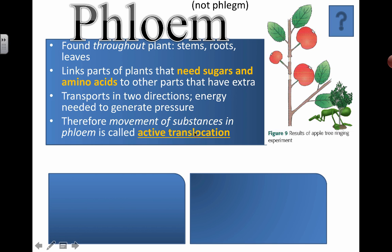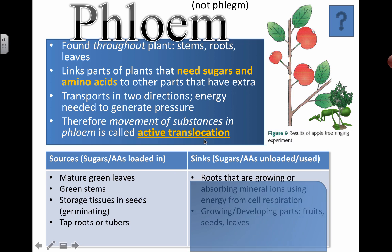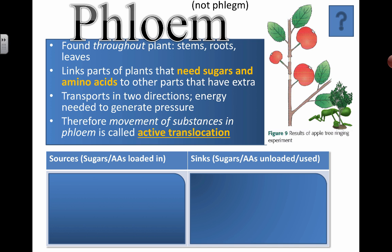Translocation means we can move things from one place to another in two different directions, like transportation basically. So here are some places where there are sources, where sugars and amino acids are loaded in, and then sinks, where sugars and amino acids are unloaded or used. Get familiar with the terms source and sink - they're going to be used quite a lot throughout this section about transport of substances in phloem.